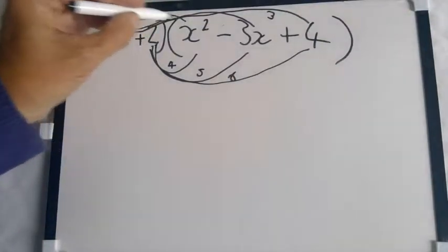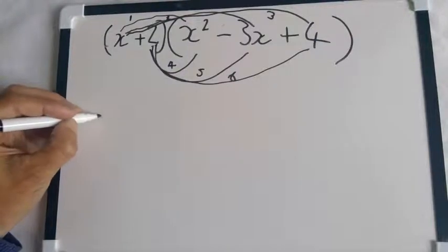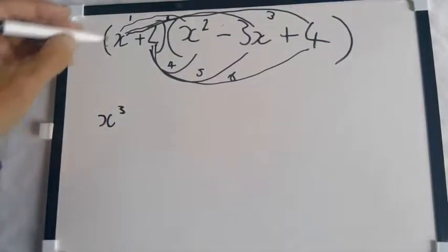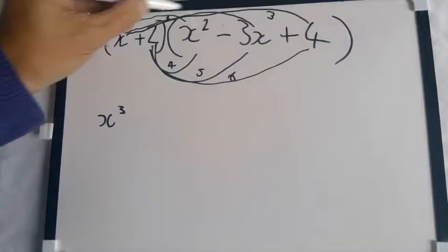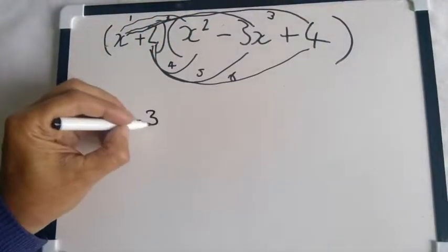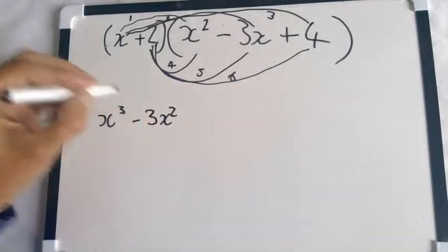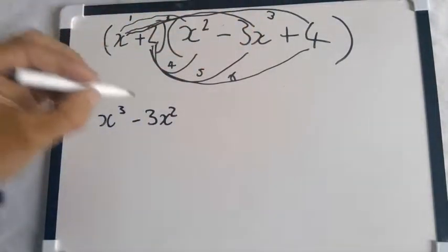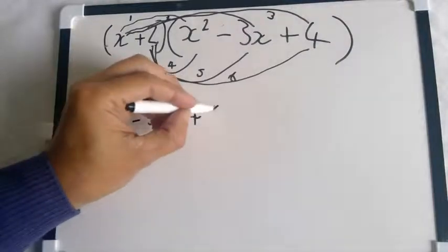Right. So x times x squared is your first thing. So that's x cubed. Your second thing is x times minus 3x, that'll give you minus 3x squared. And then we've got x times 4, which will give us 4x.